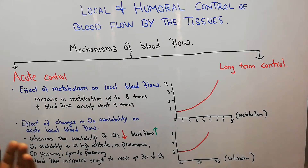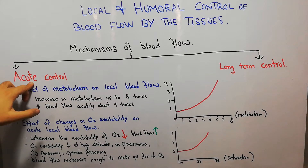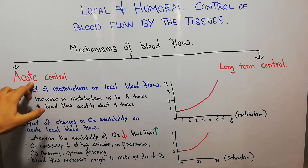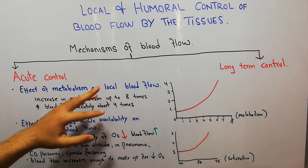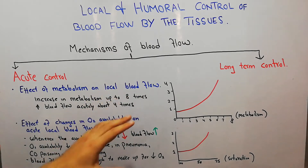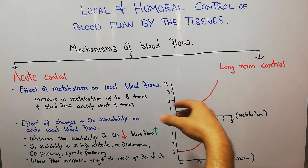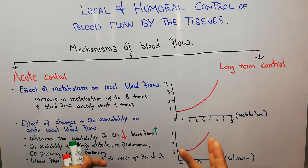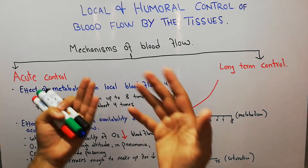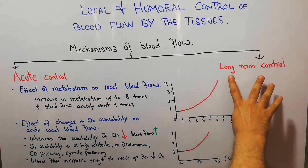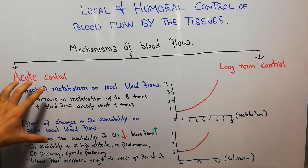At the tissue level, acute control is rapid control which occurs in seconds or minutes, and it basically occurs due to the increase or decrease in the size of existing blood vessels. Long-term control of blood flow occurs due to the increase or decrease in the sizes and number of blood vessels — the number of blood vessels increases with the passage of time, so it's a long-term control.